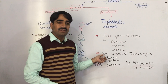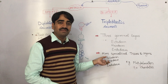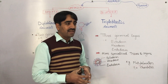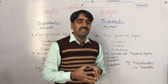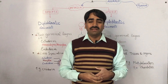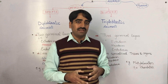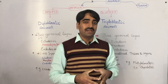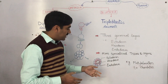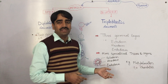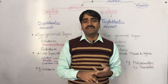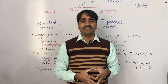The ectoderm gives rise to the integumentary system — the skin — and the nervous system and sense organs. The mesoderm forms the majority of internal body organs, including the notochord, skeleton, muscle, excretory system (kidney), reproductive system, and sometimes the outer lining of the gut. The endoderm gives rise to the internal lining of the gut, the pancreas, the liver, and some glands such as the thyroid gland.